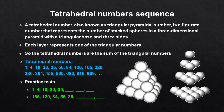Tetrahedral numbers sequence. A tetrahedral number, also known as a triangular pyramidal number, is a figurate number that represents the number of stacked spheres in a three-dimensional pyramid with a triangular base and three sides. These graphics visualize the calculation of the tetrahedral numbers. Each layer of this pyramid represents one of the triangular numbers explained previously. So the tetrahedral numbers are the sum of the triangular numbers. This list shows the first tetrahedral numbers, and here are examples of typical number series tests with tetrahedral numbers.